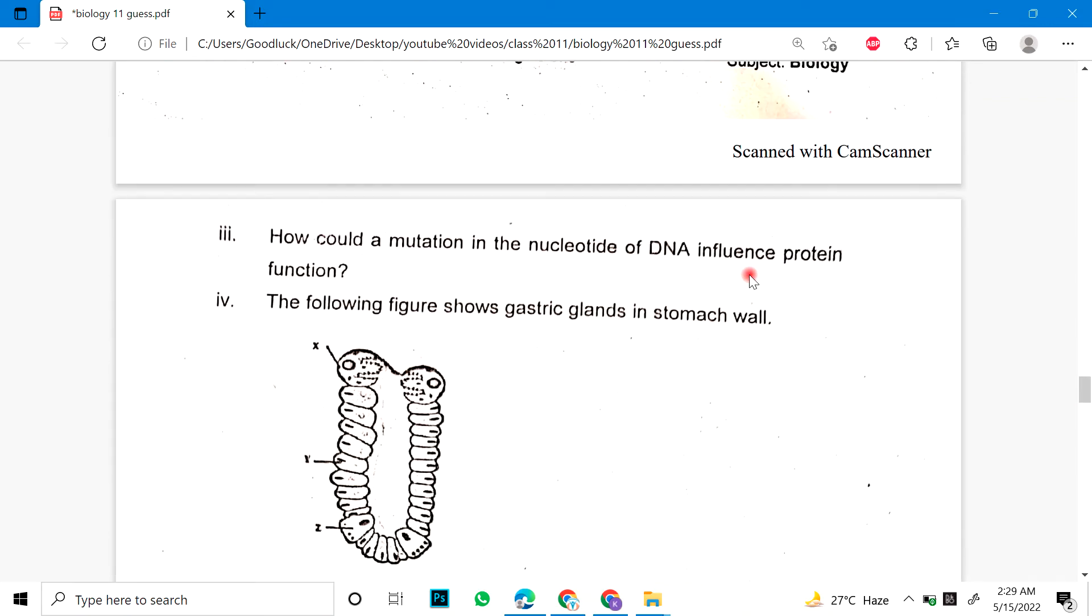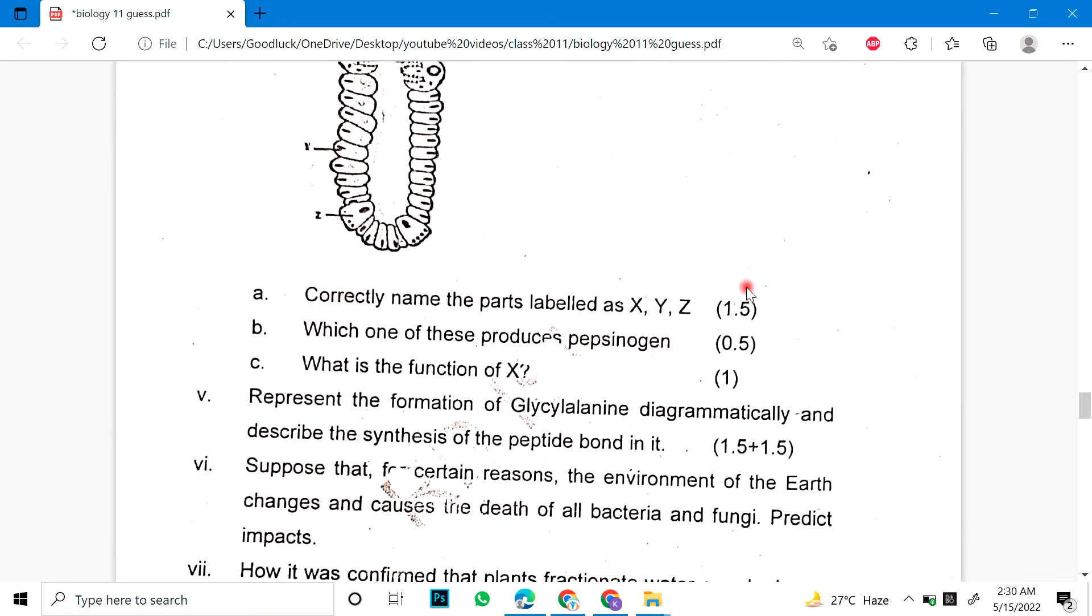Question 3: How could a mutation in the nucleotide of DNA influence protein function? Fourth: The following figure shows gastric glands in stomach wall. Number A: correctly name the parts labeled as X, Y, Z. Which one of these produces pepsinogen and what is the function of X? Marks distribution according to 1.5, 0.5 and 1 mark.